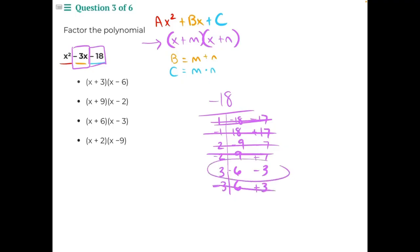This would be negative 3 and positive 3. This is incorrect, but this one, negative 3, matches our b value. So this is the pairing of numbers we will use to create our binomial. So we should have x plus 3 times x minus 6.